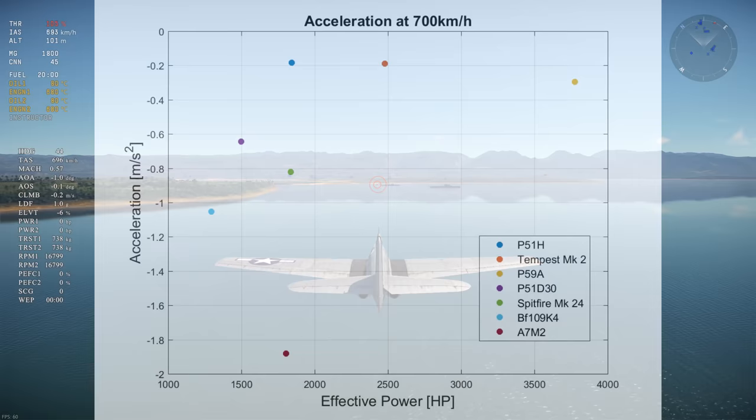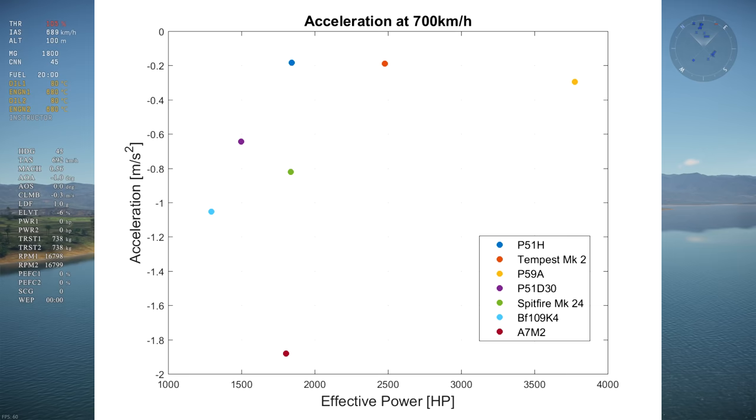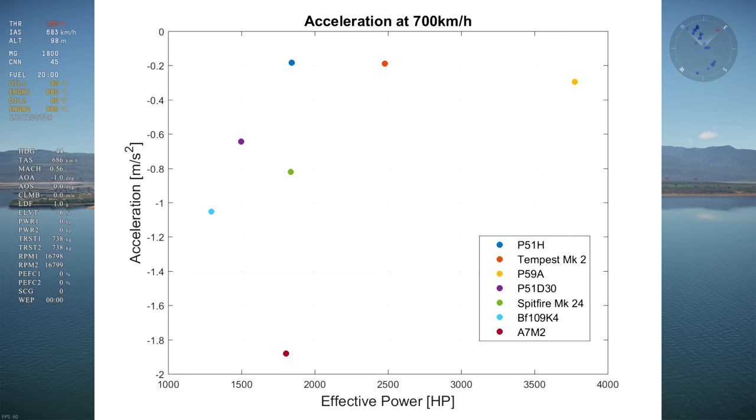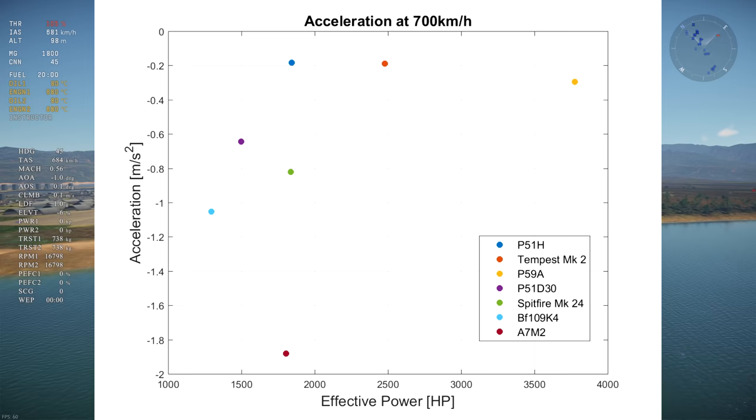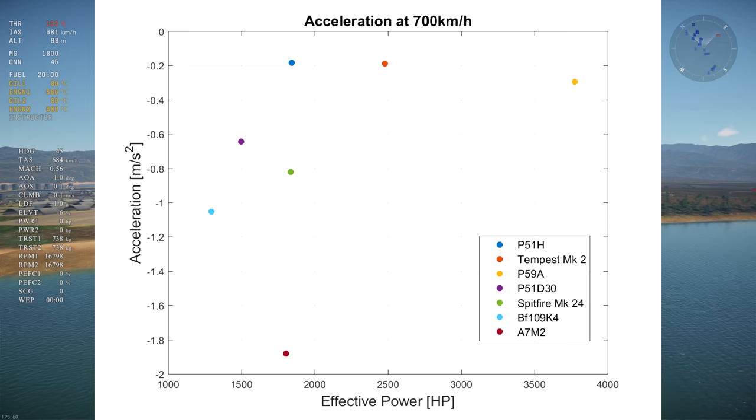Next up is acceleration as a function of power. Once again, intuitively we think that the higher the power, the higher the acceleration and LER will be. However, on this graph there's no clear correlation between power and acceleration. How is that possible? It's because you need to be looking for a ratio. You can easily have an aircraft with a lot of power but also a lot of drag, like bombers for example.